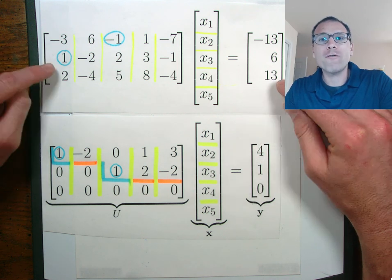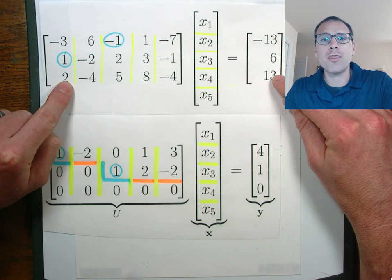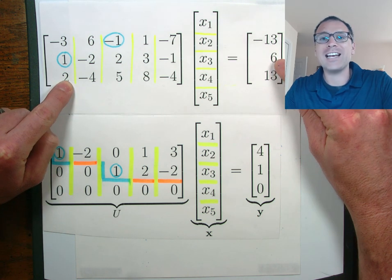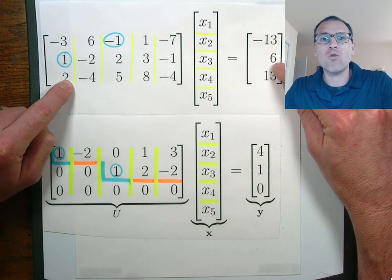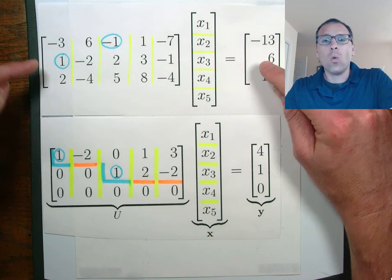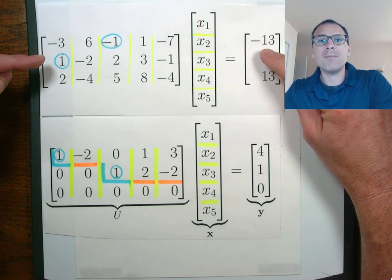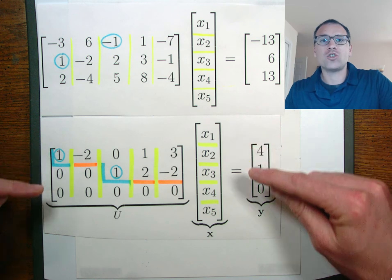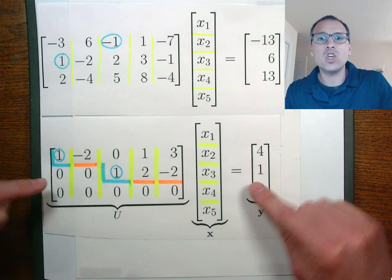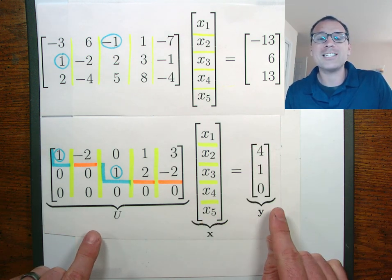Recall our first toy example with an integer 3 by 5 matrix and an integer 3 by 1 right hand side vector. When we were solving this problem we used elementary row operations to transform into the equivalent ux equal y special system.